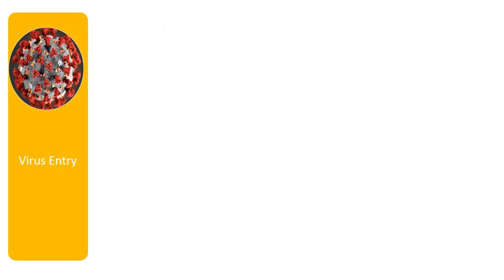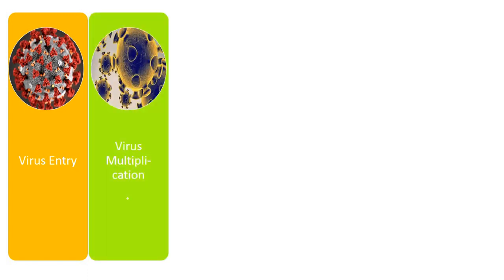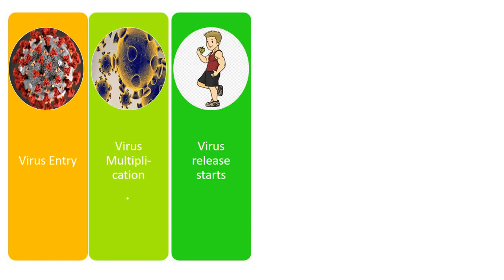For any disease pathogen to establish disease, it has to enter the human body. In this case it is the COVID-19 virus, or SARS-CoV-2. After entry, the virus multiplies within the human body, and then after some time the virus gets released into the environment from the body, but the person still looks healthy.